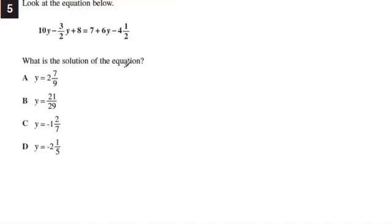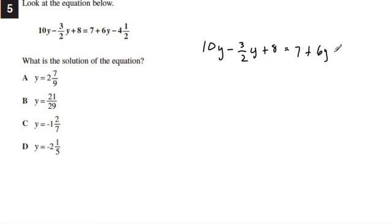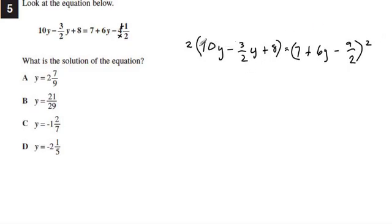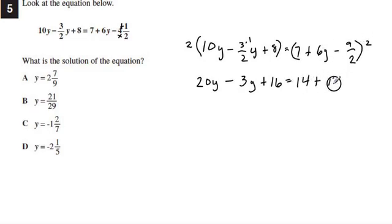Number 5: solving an equation that looks hard. First, we get rid of the fractions. We change 4.5 to an improper fraction: multiply and add to get 9/2. The denominator is 2, so we multiply the whole equation by 2. That gives us: 2 times 10y is 20y, minus — the 2 over 2 cancels to 1, so 3 times 1 is 3y — and 2 times 8 is 16 on the left. On the right: 2 times 7 is 14, 2 times 6y is 12y, and 2 over 2 times 9 is 9. Fractions are gone.